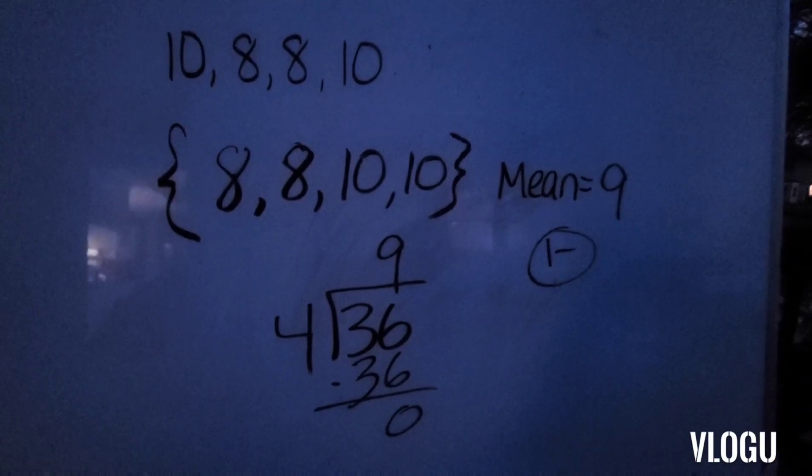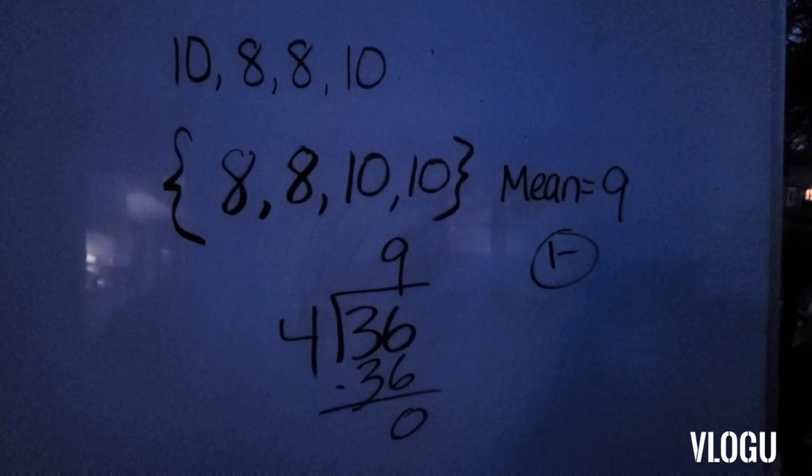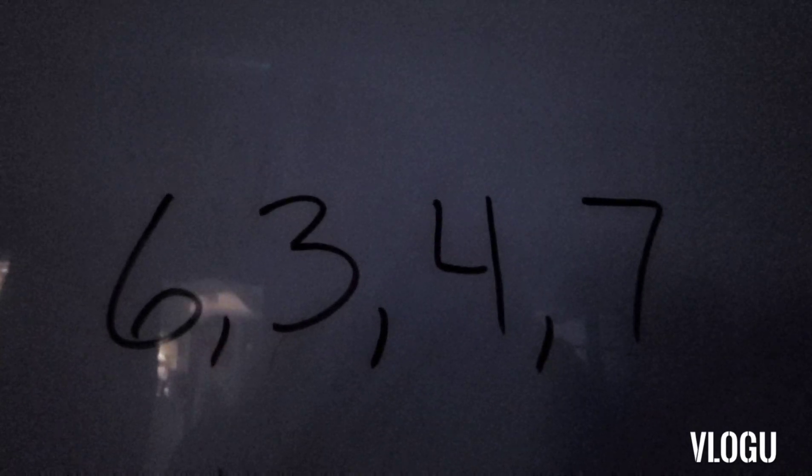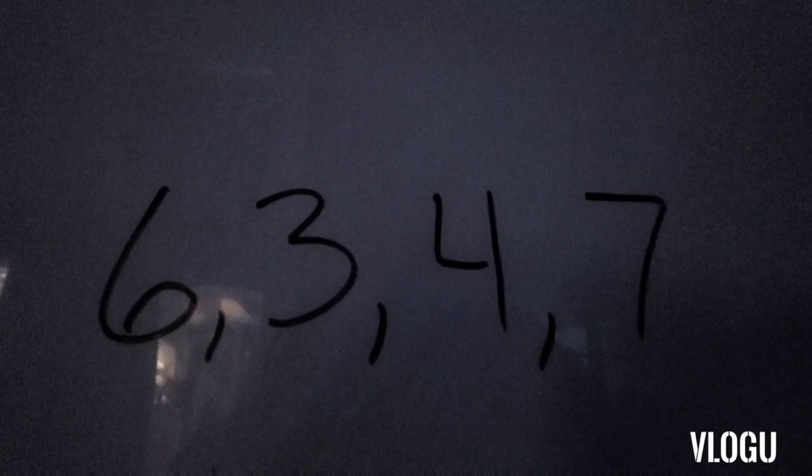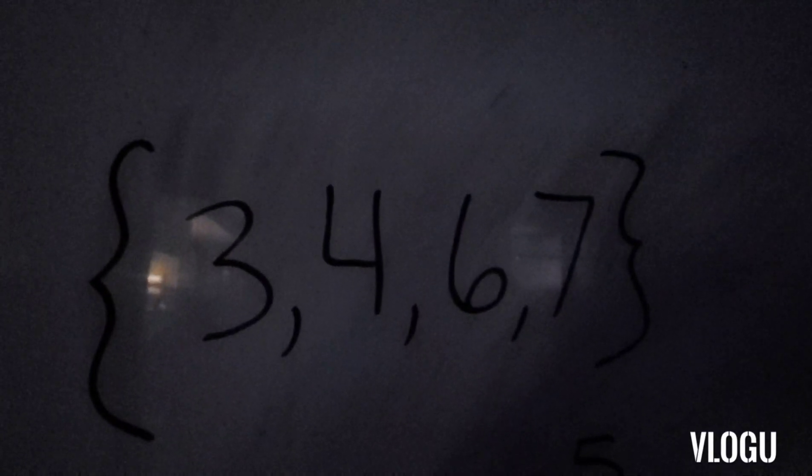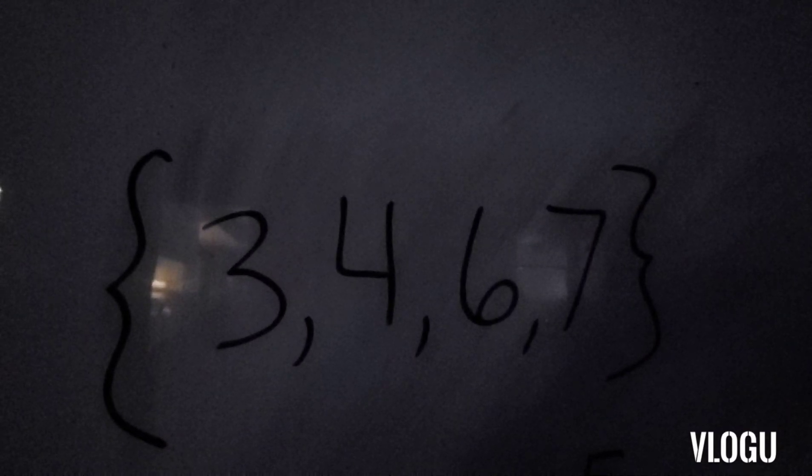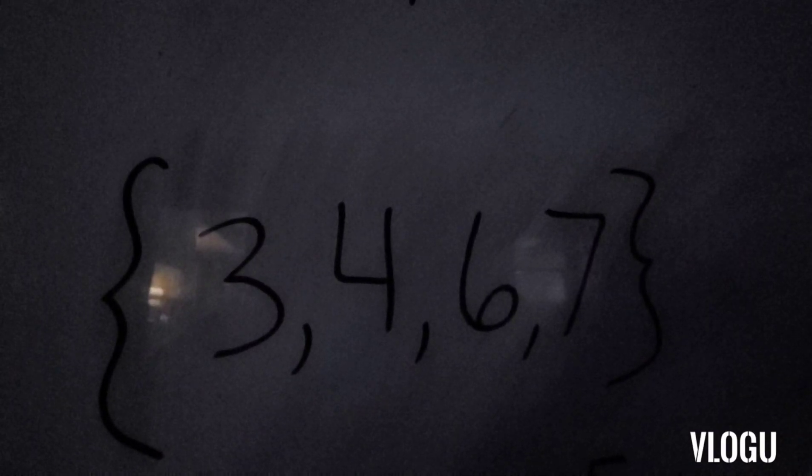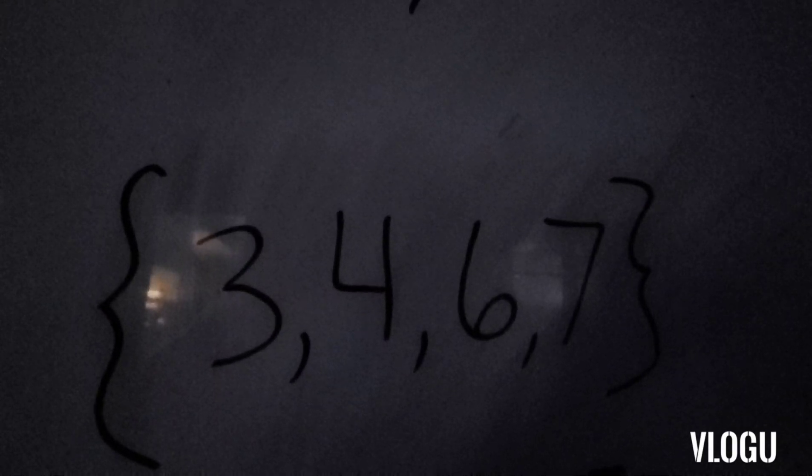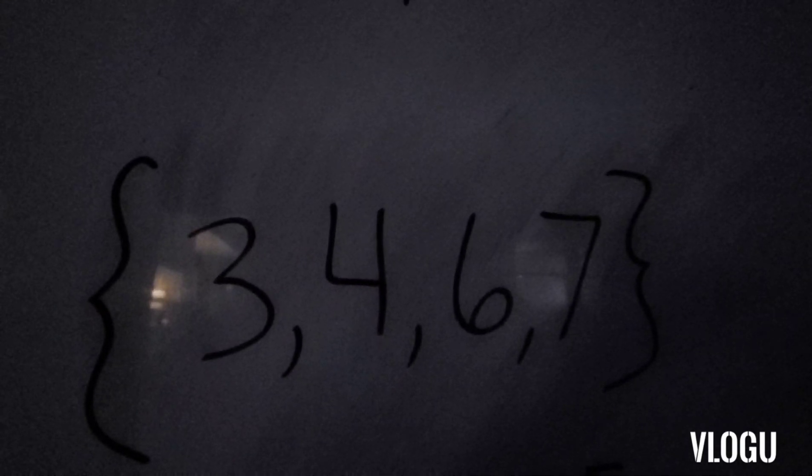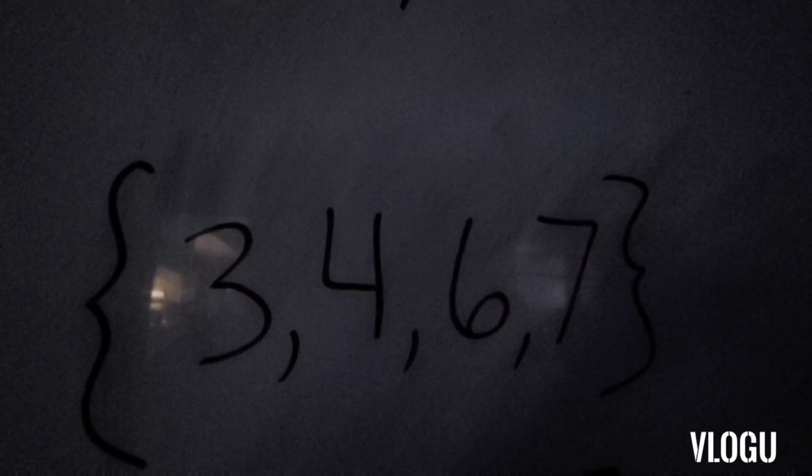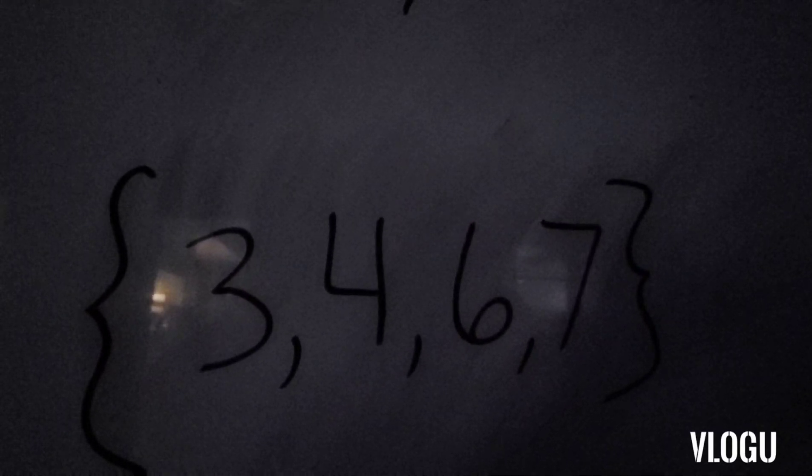I'm going to give you a problem to do completely on your own. Look at these numbers. Please pause the video and put these numbers into a number set. Pause it now. Your number set should look like this. There are curly brackets around the outsides of the numbers. The numbers are in order, three, four, six, seven, and there are commas between them. Please move on to the next step to solve the mean and pause the video now.